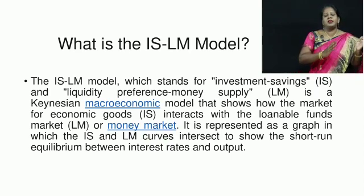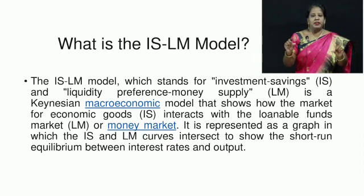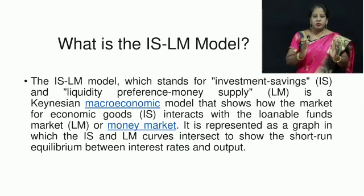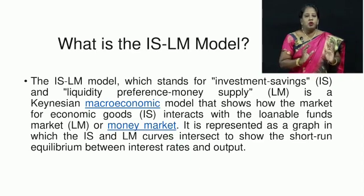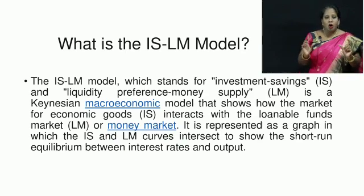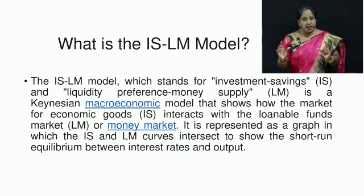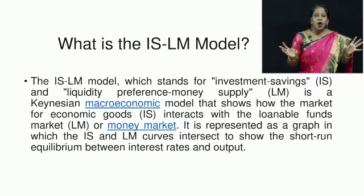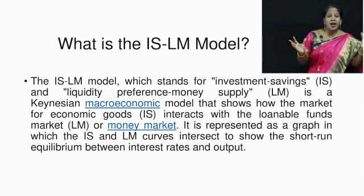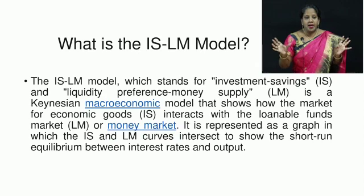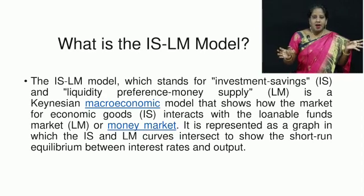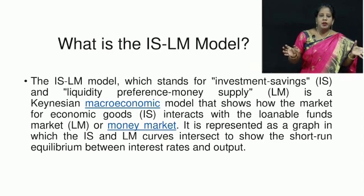IS stands for Investment and Savings — the relationship between them — and LM stands for Liquidity Preference Money Supply, otherwise called the Loanable Funds Market or Money Market. Always remember we have two markets: one is the goods market, which explains the IS model, and the other is the Money Market (LM), which tells about the demand and supply of money, whereas IS talks about the demand and supply of goods.